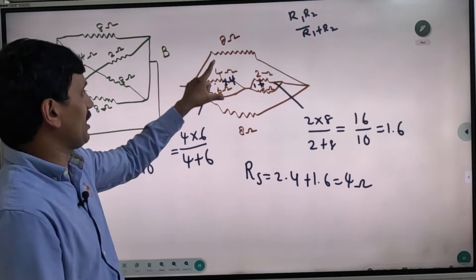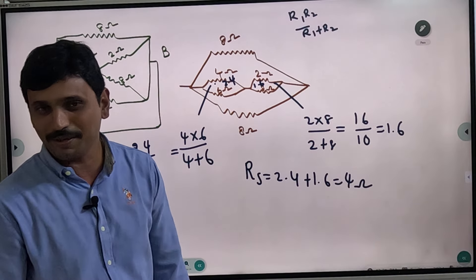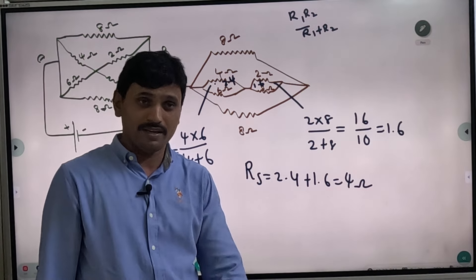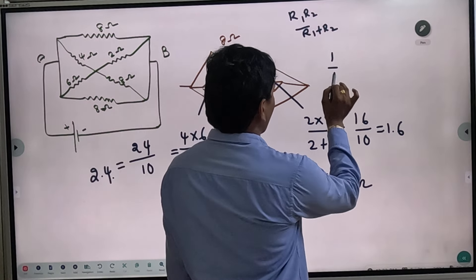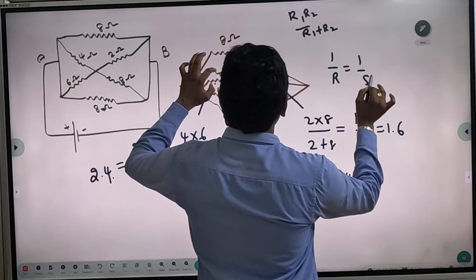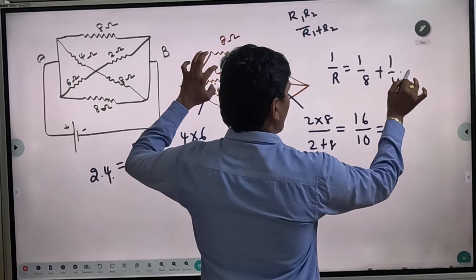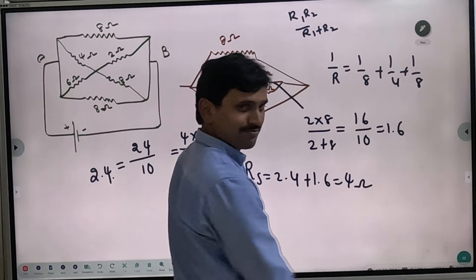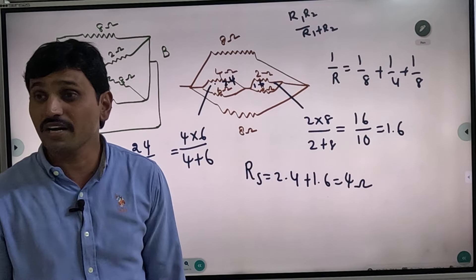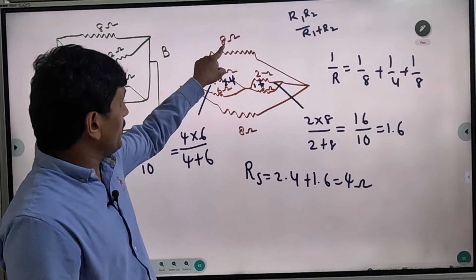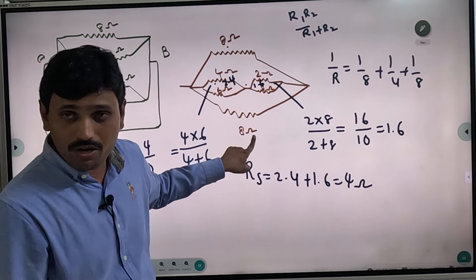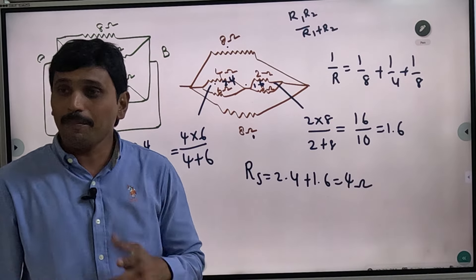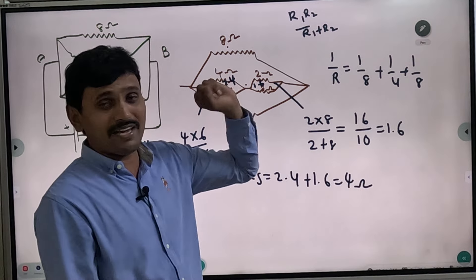If A or B are the terminals, we can solve this another way. Using the formula 1 by R equals 1 by 8, 1 by 4 plus 1 by 8. This is 4. This is parallel. 1 by R equals 1 by R1 plus 1 by R2 plus 1 by R3.